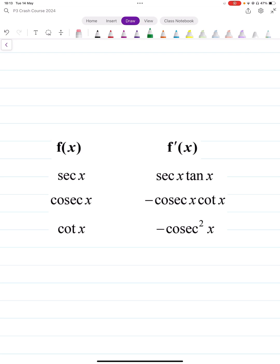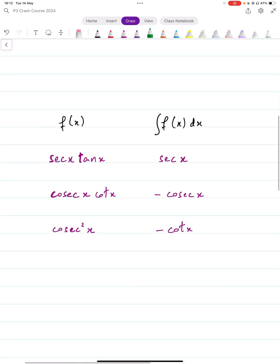Now, that means that the integration of secant x tan x would be secant x, integration of cosecant x cot x would be minus cosecant x, and integration of cosecant square x would be minus cot x. This is how these three rules are going to look like.